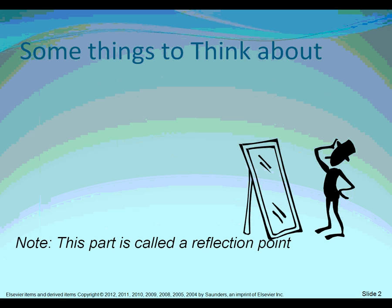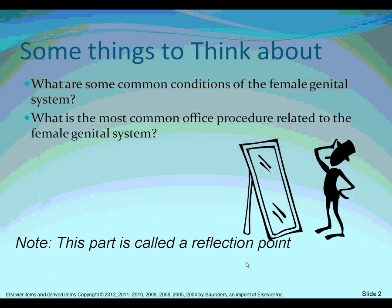Here we have a reflection point with two questions. The first is: what are some common conditions of the female genital system? The answer includes reproductive problems such as infertility and cancers, sexually transmitted diseases, and there can also be some issues with breasts. The second question is: what is the most common office procedure related to the female genital system? And the answer is colposcopy.